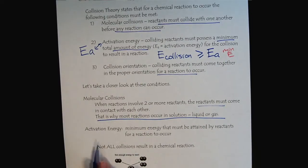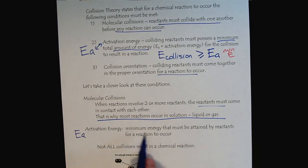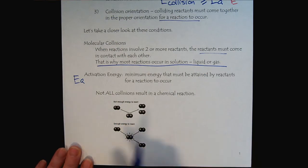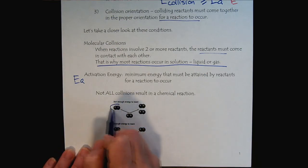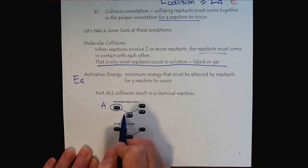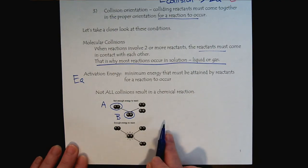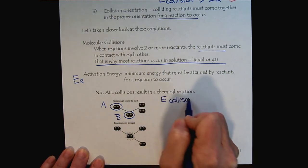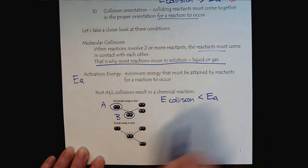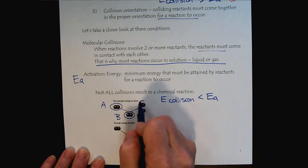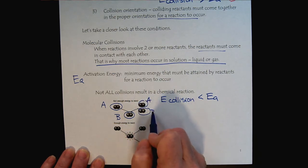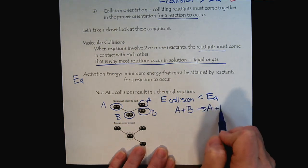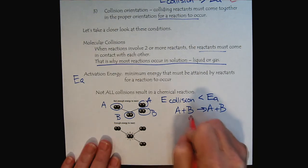Now the activation energy is this minimum energy we need for the collision. So let's look at examples here. If this represented reactant A, and here we had reactant B, in this example, the energy of the collision is below the activation energy. So when we look at the products, we continue to have A and B. So we have A plus B, and we end up with A plus B. So nothing changed. This would be no reaction.